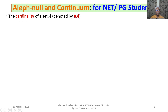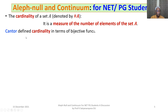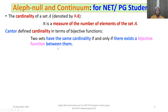The cardinality of a set A, denoted by |A|, is a measure of the number of elements of the set A. Georg Cantor defined cardinality in terms of bijective functions. He defined it as: two sets have the same cardinality if and only if they are equivalent, that is, if and only if there exists a bijective function between them.